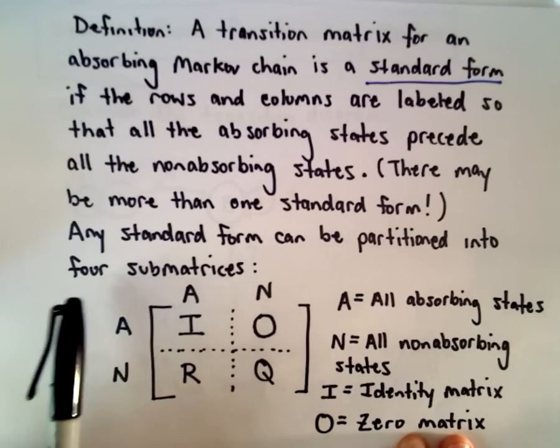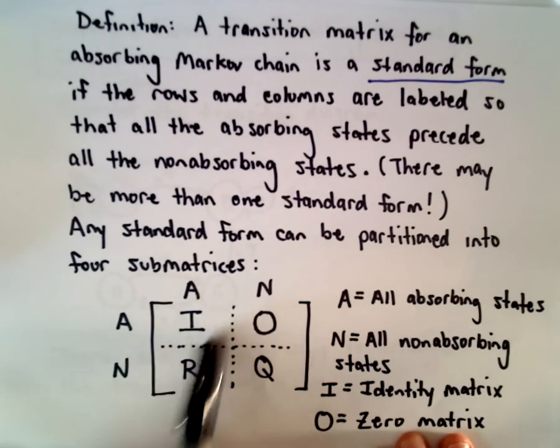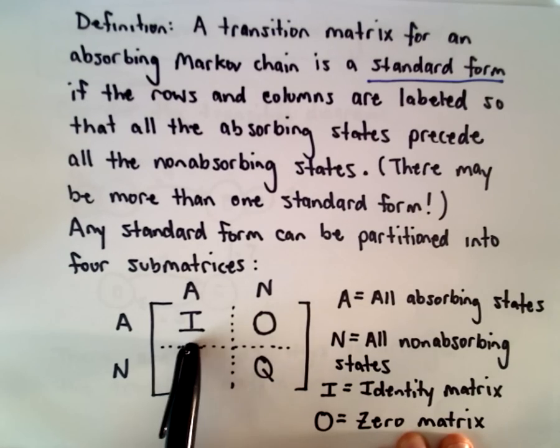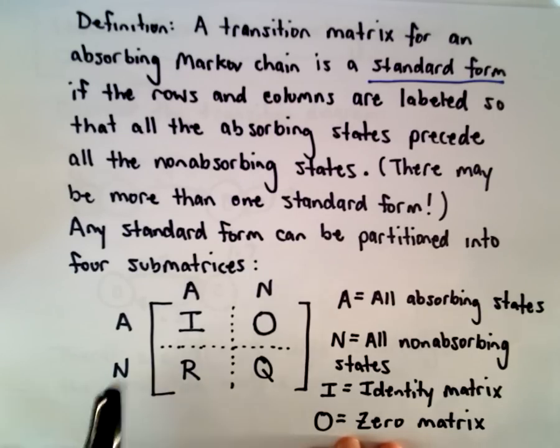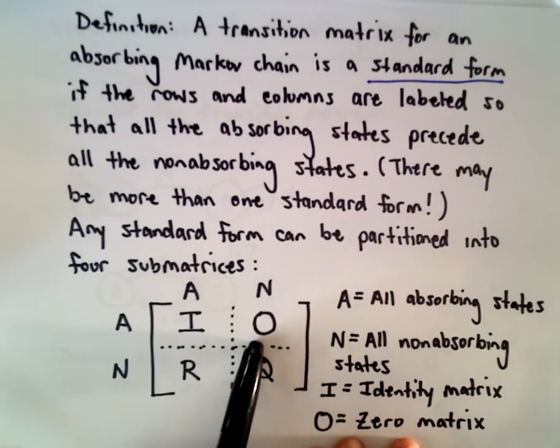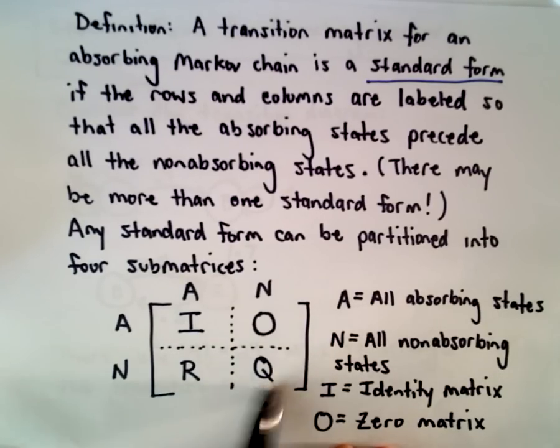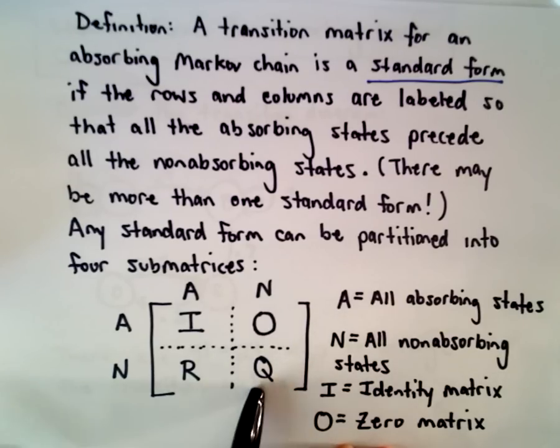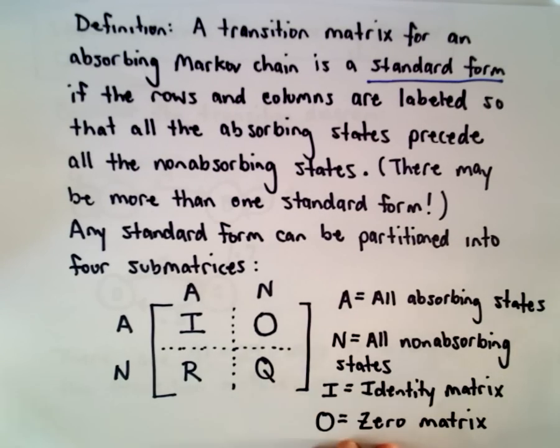And once we put our matrix in standard form, we can break it up into four little sub-matrices. In the top left corner, we're going to have the identity matrix. And again, the A is going to refer to the absorbing states. N will refer to the non-absorbing states. In the top right, we're going to have just a bunch of zeros. In the bottom left, we're going to have a matrix we'll call R. And then in the bottom right, we'll have a matrix Q. These matrices R and Q, we're going to need to use these in order to help us find the limiting matrix.